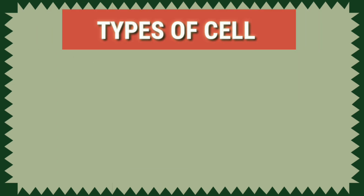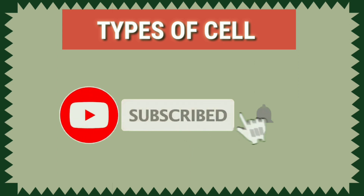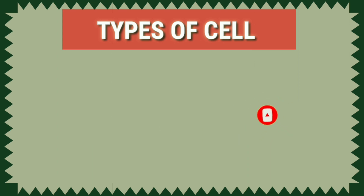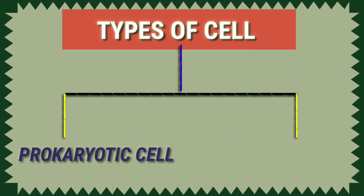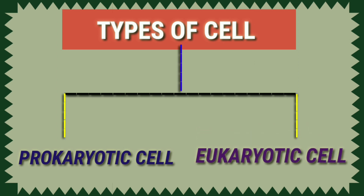Types of shell. Friends, now we see types of shell. Generally, there are two main types of shell. These are number one prokaryotic shell and number two eukaryotic shell.